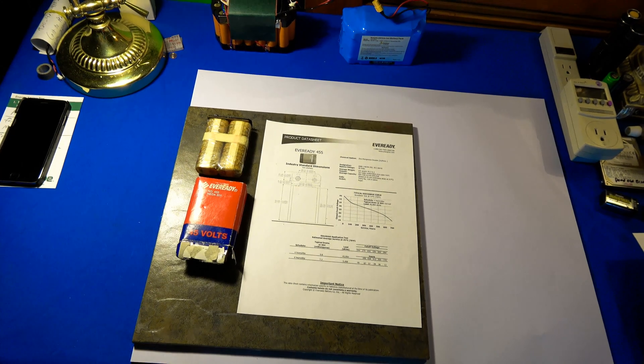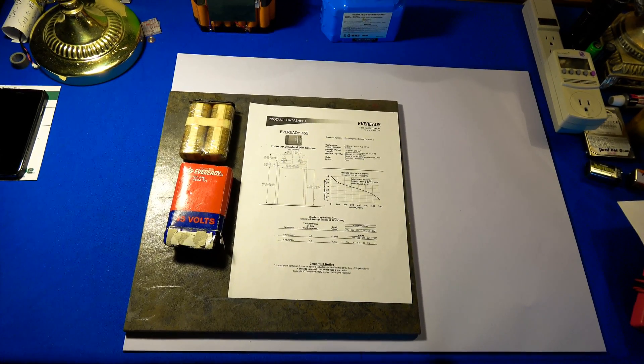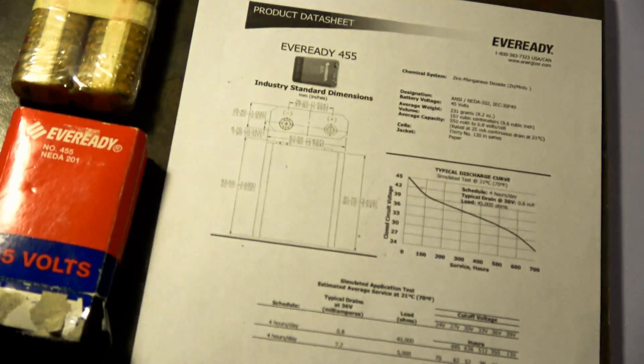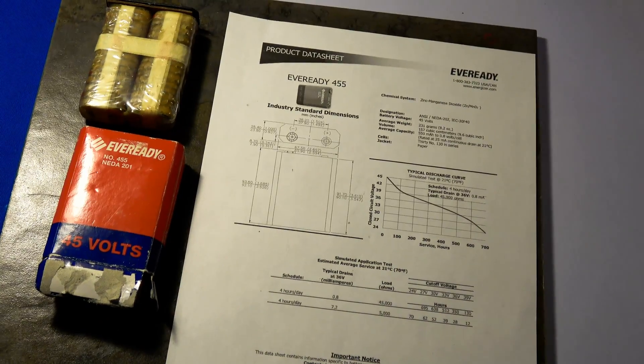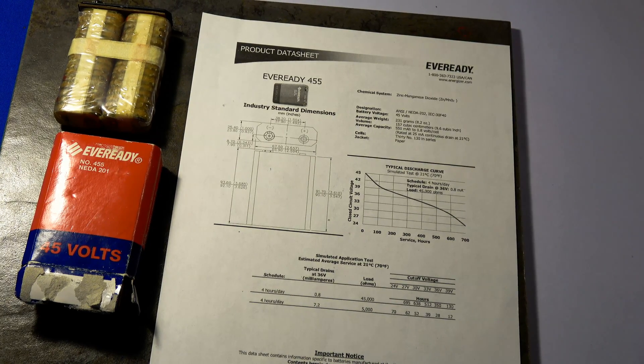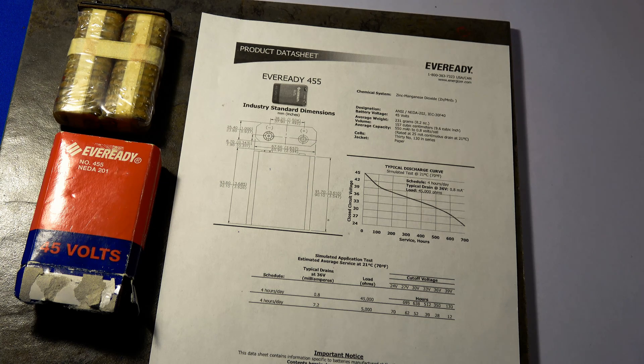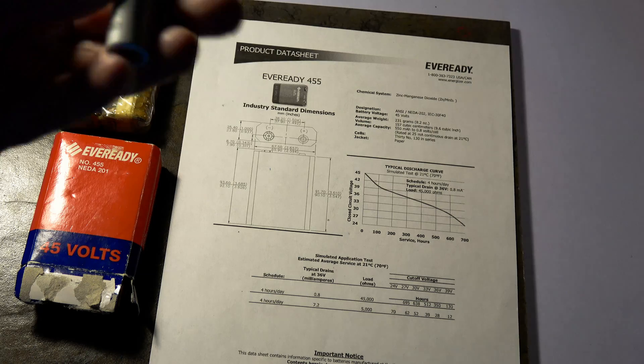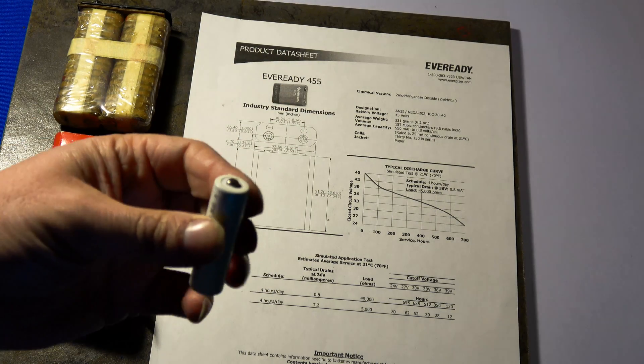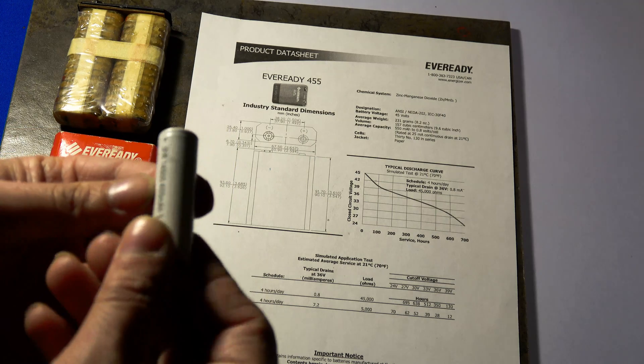So basically, any battery that is called heavy-duty or super heavy-duty is going to be a carbon-zinc battery. What is a carbon-zinc battery? I just grabbed something I thought was a battery and it turned out to be lip balm Carmex. Now this is actually a lithium cell, but this is the same size as a double-A battery. So pretend it is a normal double-A battery.